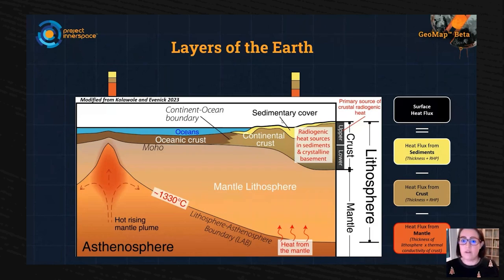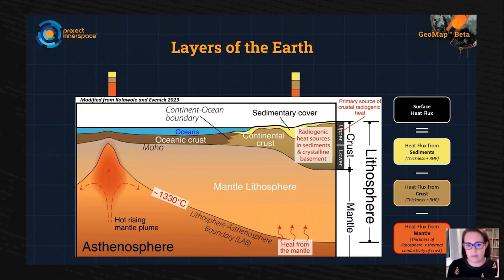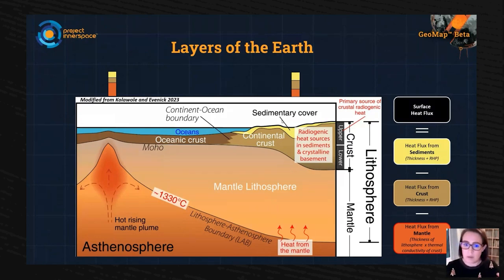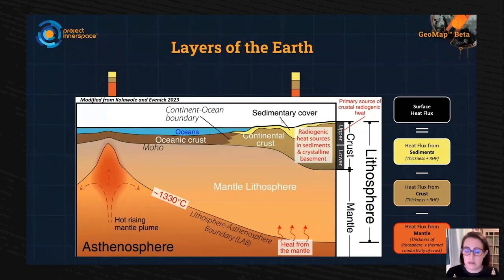A thinner lithosphere corresponds to a much higher mantle heat flux. The lithosphere is thickest in old stable continents — 200 to 250 kilometers — which tend to be cold. The thinnest lithosphere is newly formed oceanic crust, which is hot. Thicker crust tends to generate more heat production due to radiogenic isotopes — uranium, thorium, and potassium — particularly in the upper crust. Where you have very thick granitic crust, the contribution to total surface heat flux can be up to 50 percent.